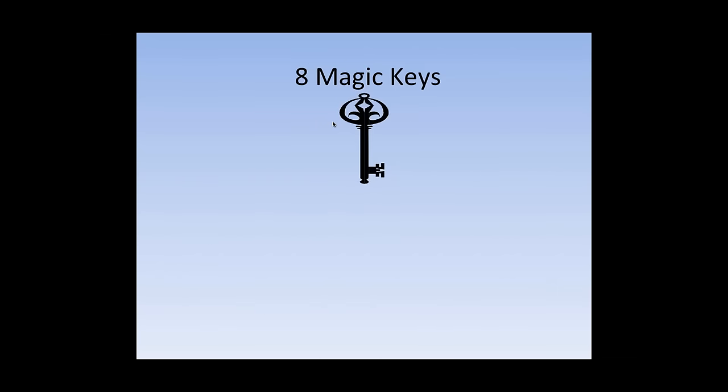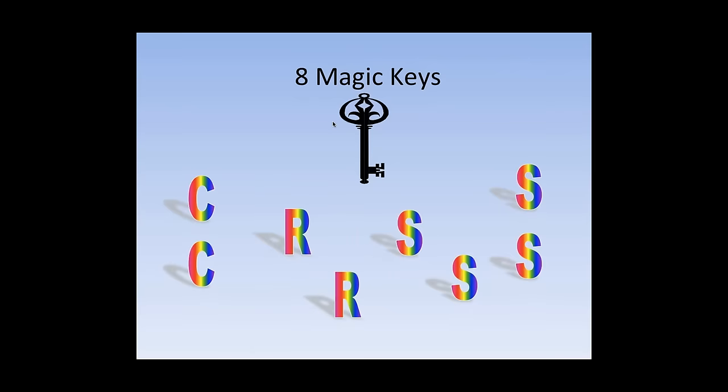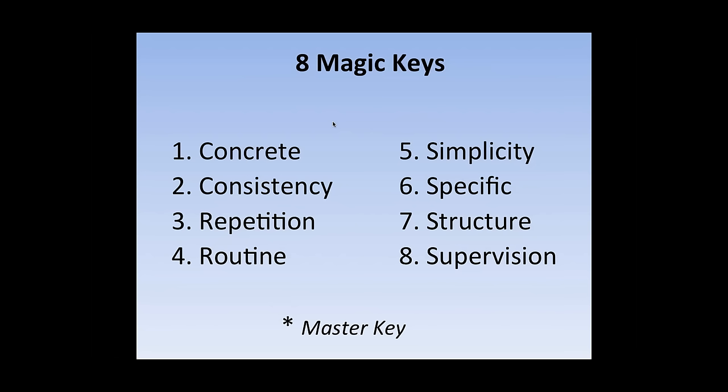Years ago, Jan Lutke and I came up with these eight magic keys. They're simple, almost silly. But if you look at them, there's two C's, two R's, and four S's. And it's how we avoid crises with students with FASD. It's so simple that it seems almost silly, and it works. NOFAS has a video that you can order from them on the eight magic keys, which is an animated video developed by a think tank of master teachers in Anchorage School District. So the eight magic keys, let's go through them.